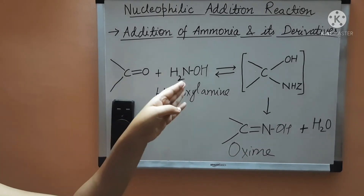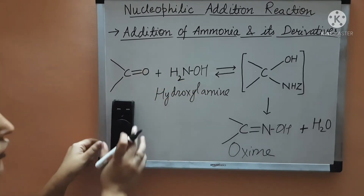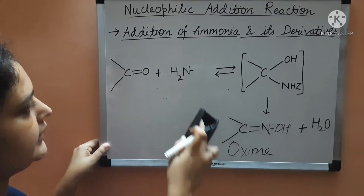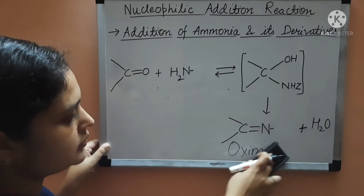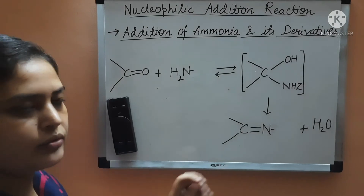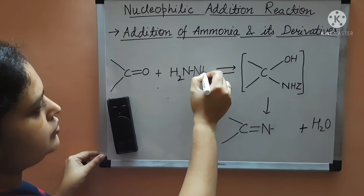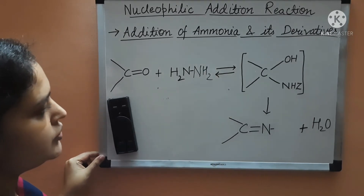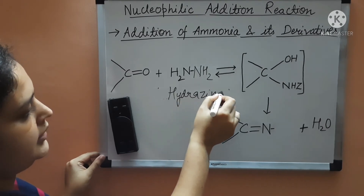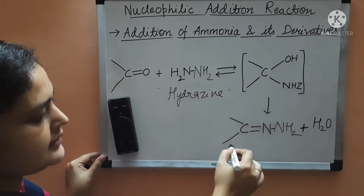If your Z group is NH2 instead of OH, then you will use hydrazine — where Z is NH2. The reactant is known as hydrazine, and the product where Z is also NH2 is known as a hydrazone.